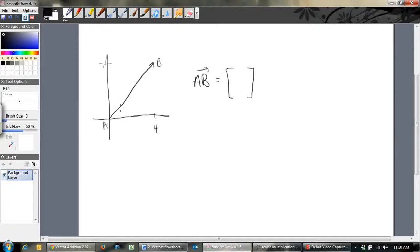And what we say is how far does it go across, and how far does it go up. So how far does it go across? It goes across 4 units, and so we write a 4 up here. And how far does it go up? It goes up 7 units, and so we can write this as a column vector. And that tells us it goes across 4 units, up 7 units.